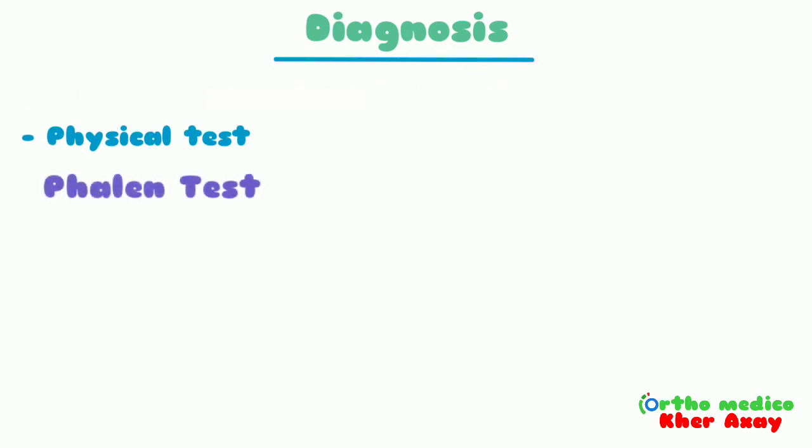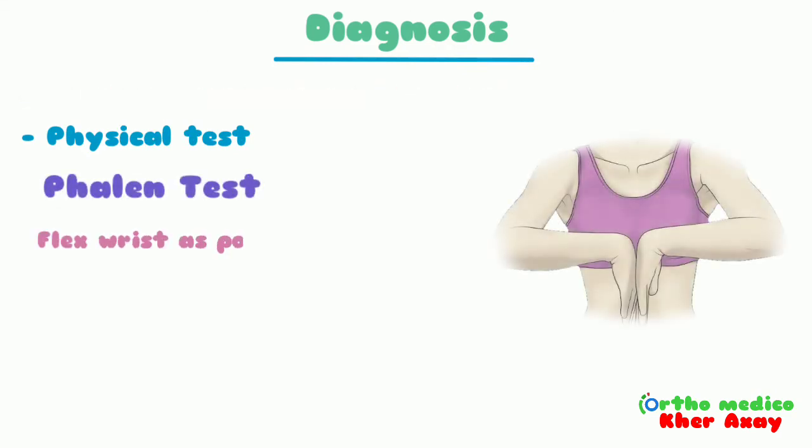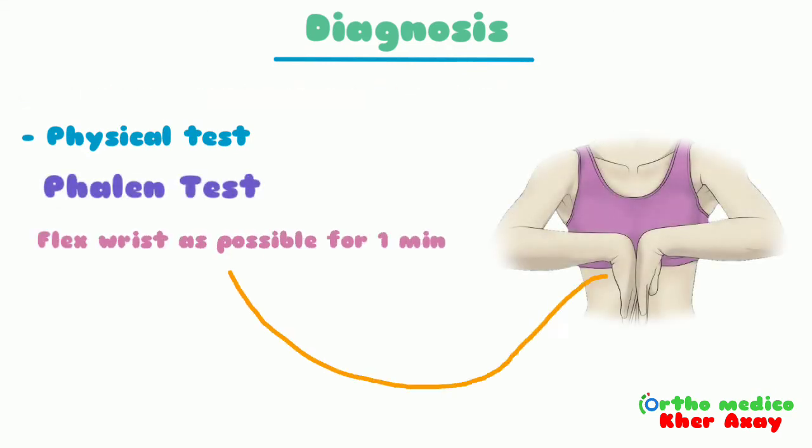The first physical test is the Phalen test. The patient flexes the wrist as much as possible for one minute, with the wrist at a 90-degree flex.